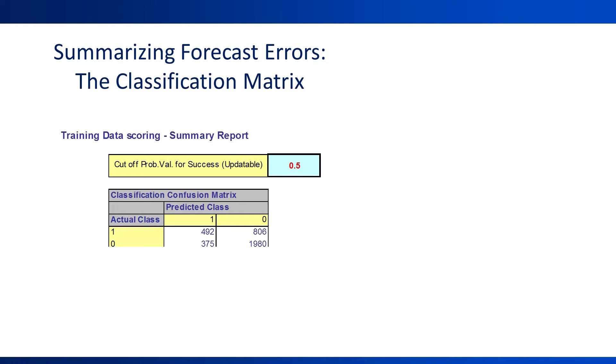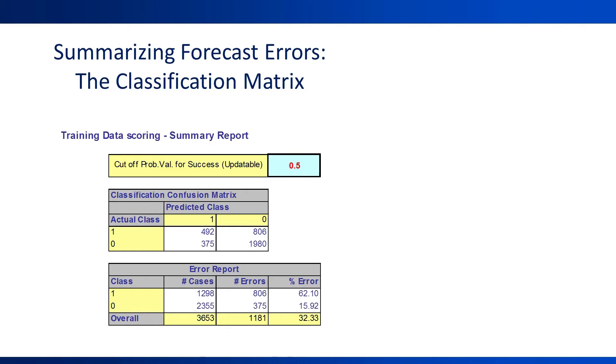Various performance metrics can be computed from these four numbers in the classification matrix. For example, here are the error rates for rainy and non-rainy days. This model is wrong on 62% of rainy days. It's wrong only on 16% of non-rainy days.